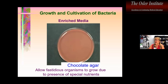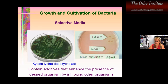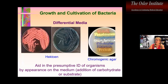Enriched media allows fastidious organisms to grow due to those extra nutrients. Organisms like Haemophilus and pathogenic Neisseria prefer enriched media, so we always add it for lower respiratory tract, genital, and sterile body fluid specimens. Selective media can be made by adding compounds — such as antibiotics — that inhibit one organism over another. Examples include xylose-lysine-deoxycholate agar and MacConkey agar, which inhibit gram-positive organisms but allow gram-negatives to grow. Differential media further allows presumptive identification based on color reactions observed on the plate.